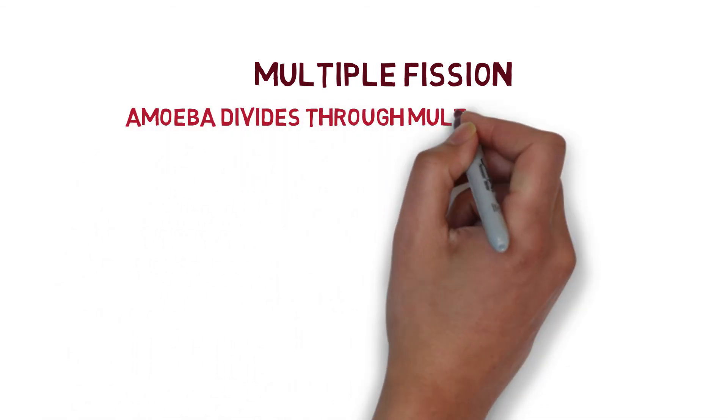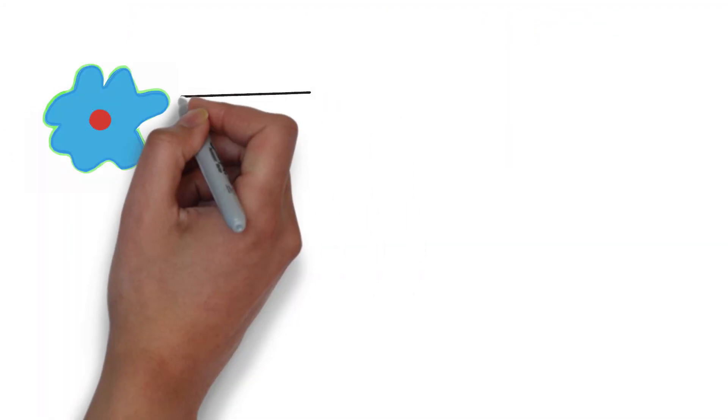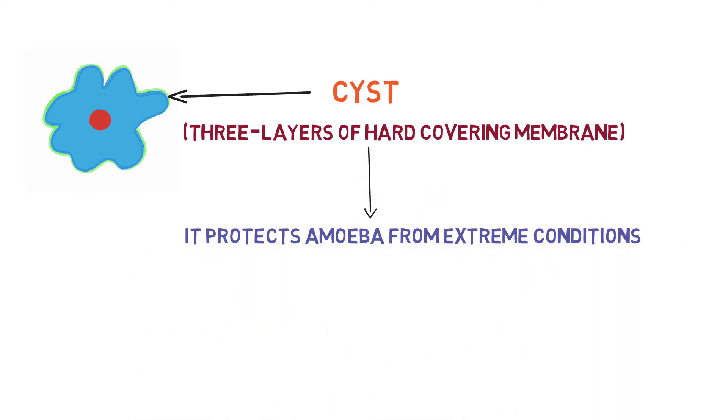But multiple fission occurs in amoeba when the condition becomes unfavorable for survival. So an amoeba cell forms a covering around itself called a cyst. It is a three-layer hard covering membrane which protects them from extreme conditions.